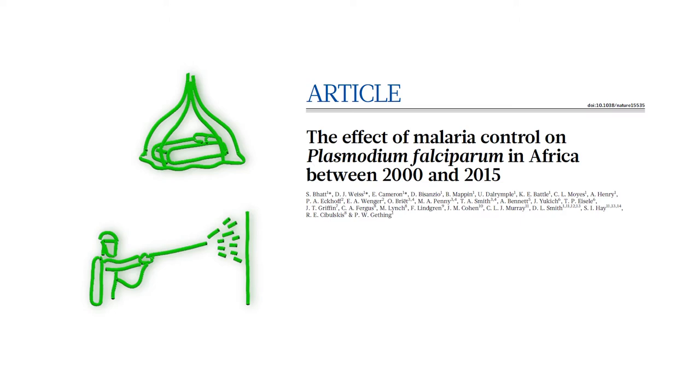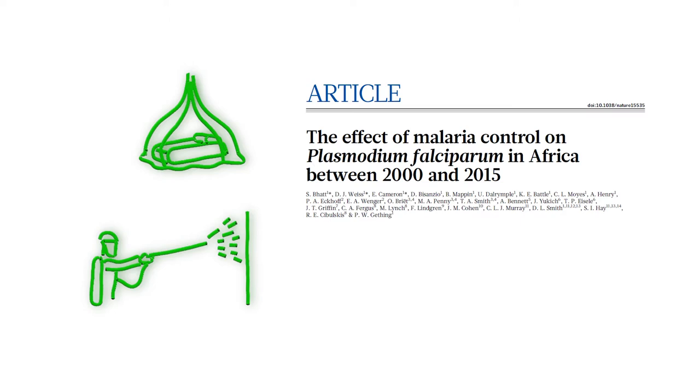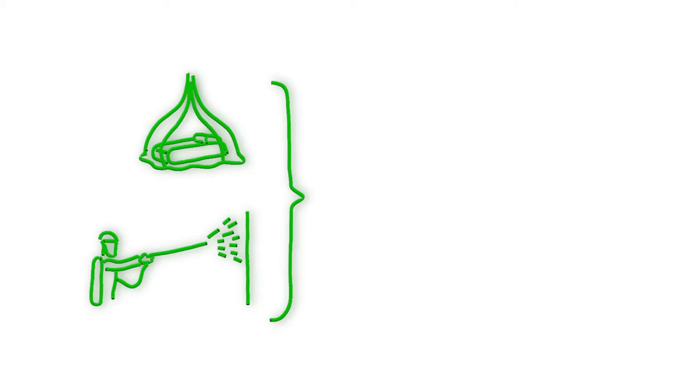Research published in October 2015 demonstrated that together, these two vector control interventions have accounted for about 78% of the gains.